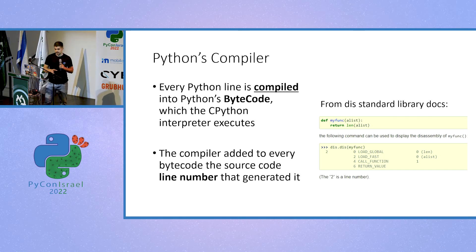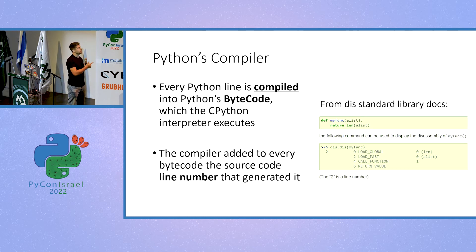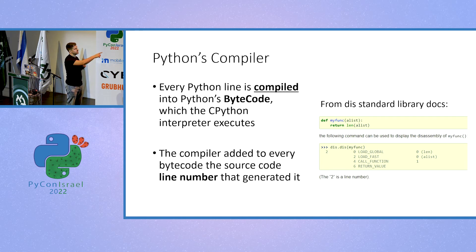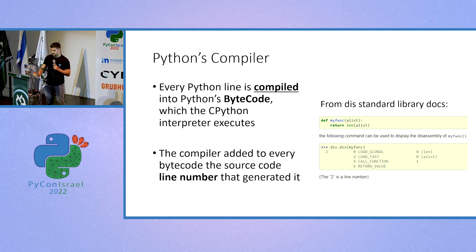There are three ideas we need to think about regarding Python. The first is the Python compiler. The Python compiler takes the source code and compiles it into Python bytecode. An example of Python bytecode is on the right — we have a simple function, and when compiled it produces the following bytecode. The bytecode is longer: for every line of Python source code there are multiple bytecode lines. We also keep as metadata the line number from the source code that produced those bytecodes.